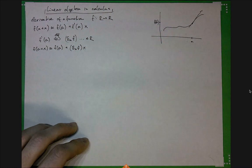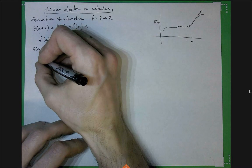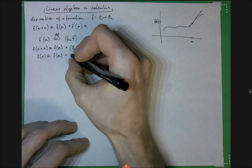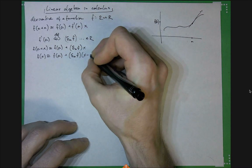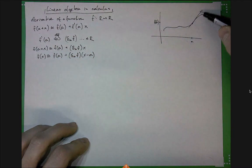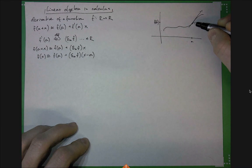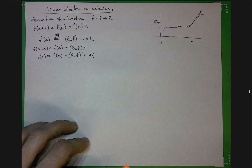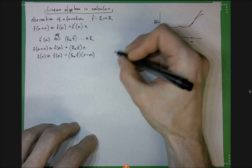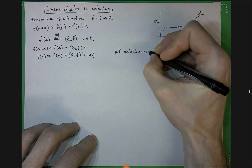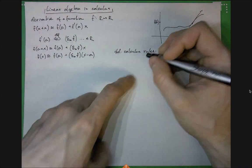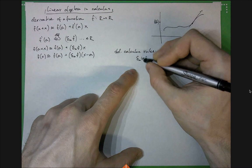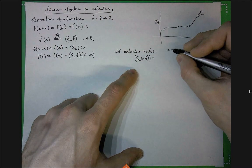I could also write it in different ways with slightly different variables — it's really the same idea. All of these equations capture the idea that this linear function is the locally optimal approximation of my original function at point a. So this is a sort of differential-type notation.